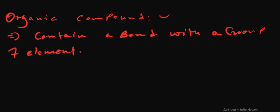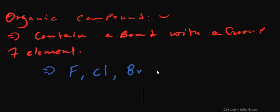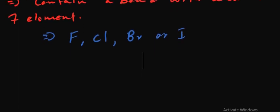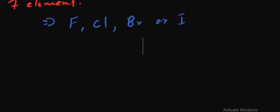When we talk of Group 7 elements, we are talking about elements like fluorine, chlorine, bromine, and iodine. All the Group 7 elements bond with organic compounds to form what we are calling alkyl halides.